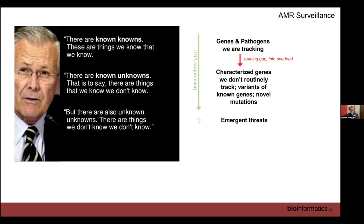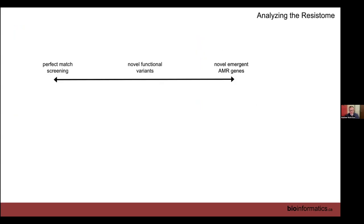DNA sequencing, as opposed to PCR and culture, promises to unlock much of this space: you get all characterized genes and their variants, novel mutations, and there's growing AI/machine learning work for emergent threat detection. The key training gap is that public health workers used to tracking a small number of things may now face a list of 40 genes and mutations from sequencing and not know what to do with it — there's information overload as well as a skill set gap for making accurate annotations.